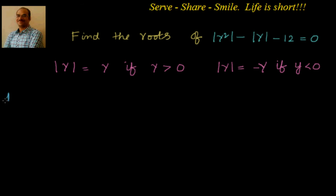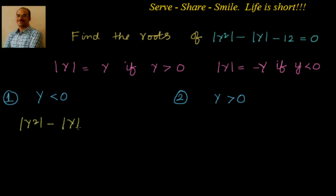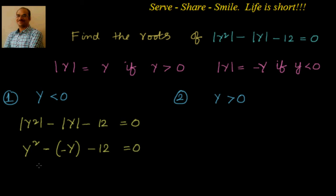We will have two scenarios. In the first scenario, y is less than 0, and in the second, y is greater than 0. For Case 1, when y is less than 0: y is negative, but y squared is positive, so the absolute value of y squared is just y squared. Since y is less than 0, the absolute value of y returns minus y. So the equation becomes y squared minus (minus y) minus 12 equals 0.